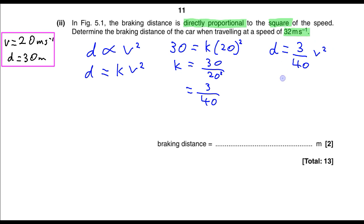Substituting in the value of v, we will have 3 over 40 times 32 squared, and this will give us the braking distance as 77 meters.